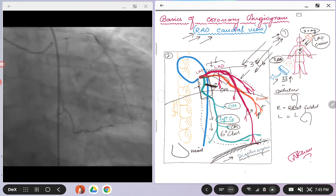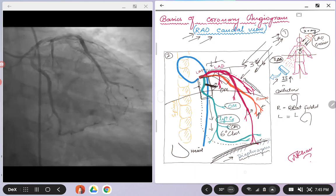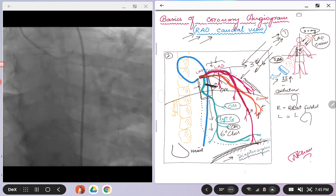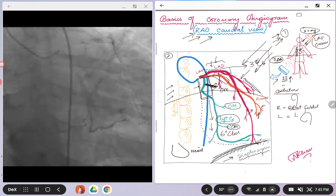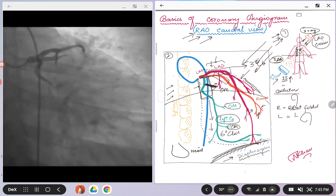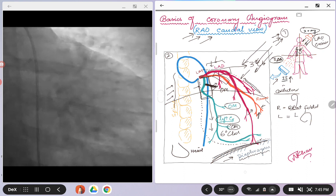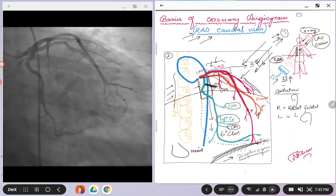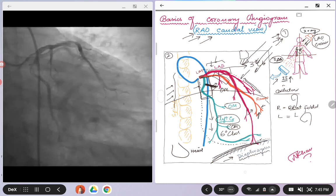So if this is the x-ray beam coming like this, it's going to come across the heart first, so you see the heart borders, and then it's going to enter the spine of the patient as I have shown in this picture in yellow. So the spine in the RAO caudal will be on the left side.